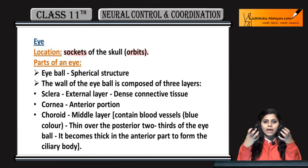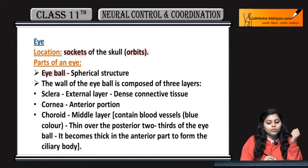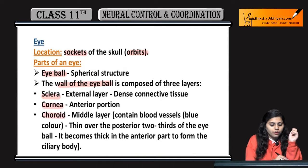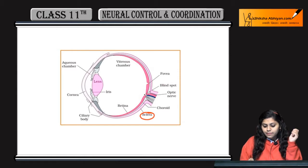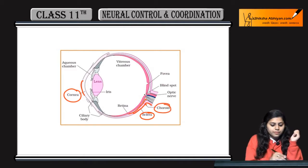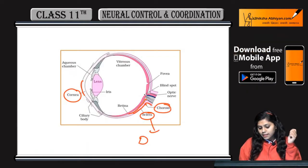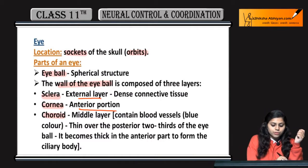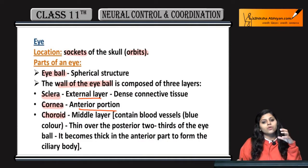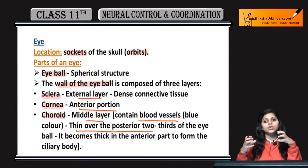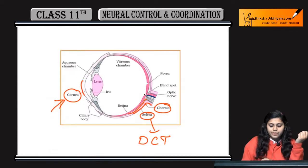Eye sockets of skulls are called orbits, where the eyeball is present. The eyeball is a spherical structure with three layers: sclera, cornea, and choroid. Sclera is the posterior portion, cornea is the anterior portion, and choroid is the middle layer. Sclera is the external layer made of dense connective tissue. Cornea is present in the anterior portion. Choroid is the middle layer containing blood vessels, forming a thin layer over the posterior two-thirds of the eyeball, becoming thick anteriorly to form the ciliary body.